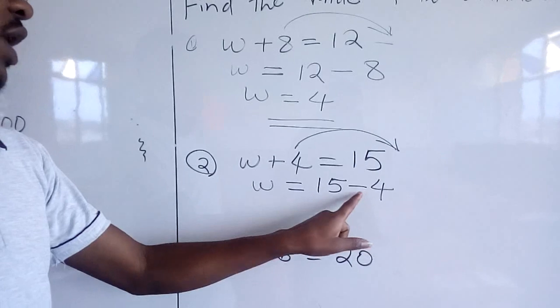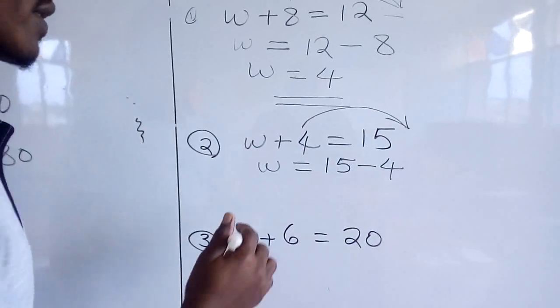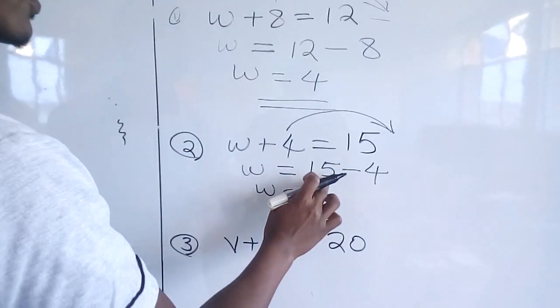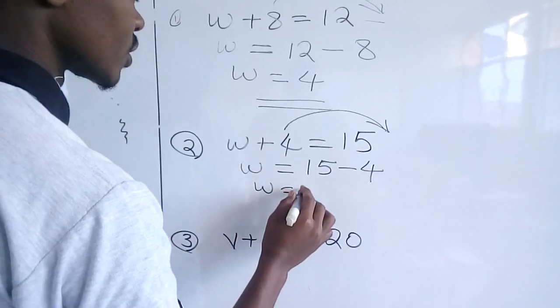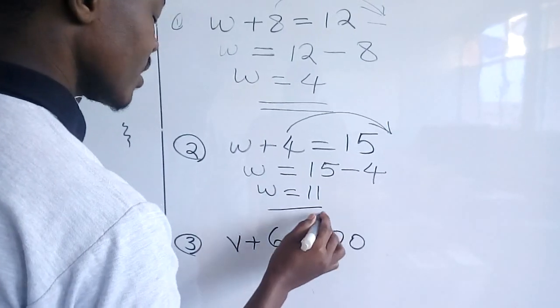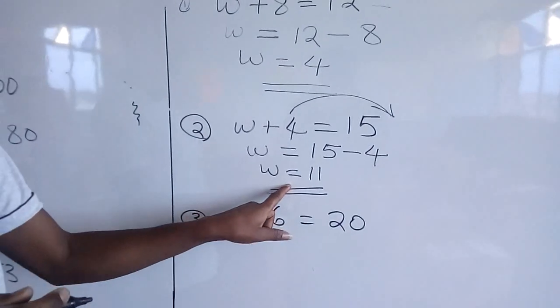Now, we are going to have 15 minus 4. Therefore, our W will be — solve this one — 15 minus 4, you get 11. Therefore, W is going to be 11.